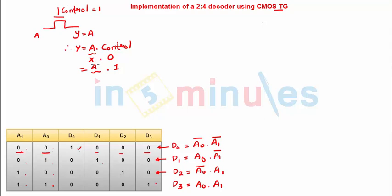Here d0, similarly, if we are using an nMOS to be implemented, it's nothing but a0 bar ANDed with a1 bar. So let's quickly do that. Suppose this is my nMOS transistor, this is my a1 bar at its input and this is a0 bar.